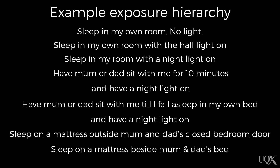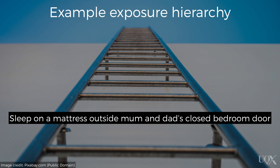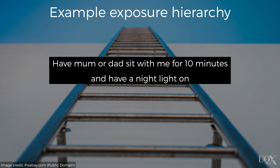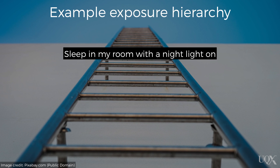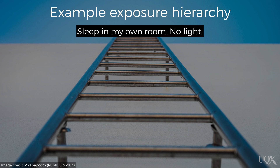Let's look at an example exposure hierarchy for a child who is fearful of sleeping in their own bed. Each step becomes a little more difficult than the preceding one. The child starts at the bottom step and practices each night until confident to move up. For example: sleep on a mattress beside mum and dad's bed; then outside their bedroom door; then have mum or dad sit until falling asleep in own bed with a nightlight; then mum or dad sit for 10 minutes with a nightlight; then sleep in own room with a nightlight; then with the hall light on; and finally, sleep in own room with no light.